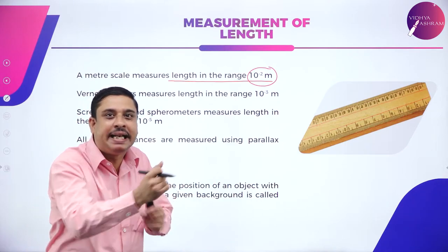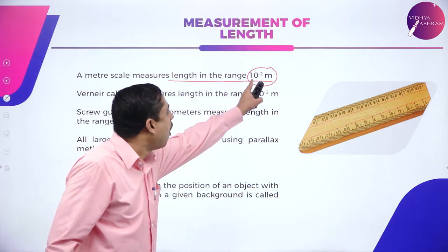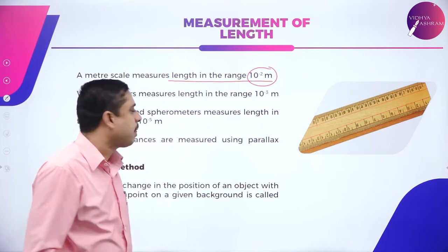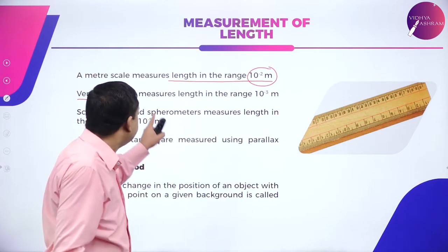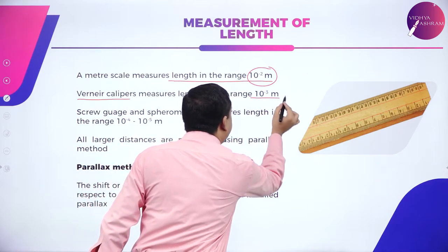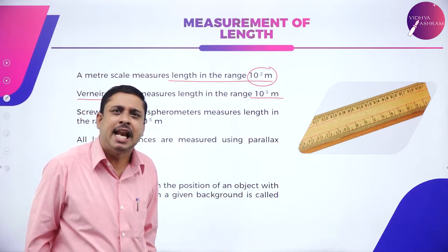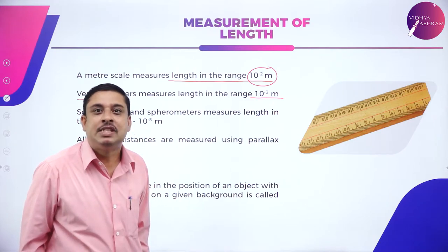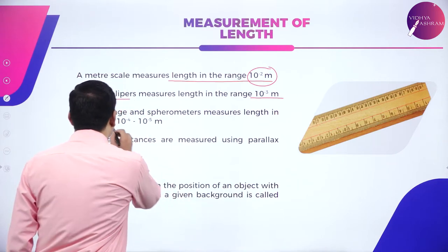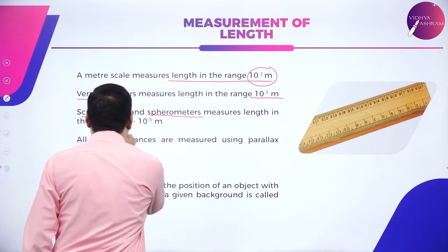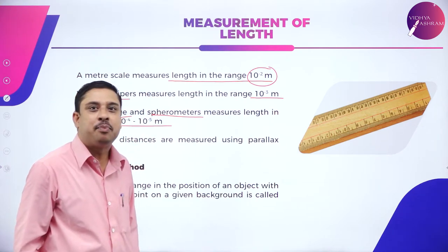So I use the normal meter scale, which can measure the smallest possible length of 10^-2 meter. The smallest length that can be measured using calipers is 10^-3 meter. So I measure screw gauge and spirometer in the range 10^-4 to 10^-5 meters.